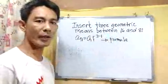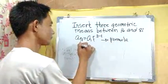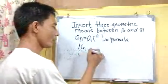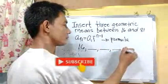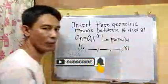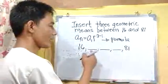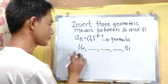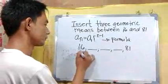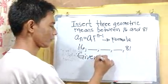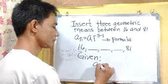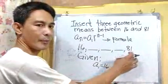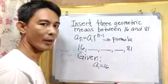We will write a sequence using 16 and 81 by inserting three spaces between them. The three spaces represent the geometric means we need to find. Our a sub 1 equals 16.